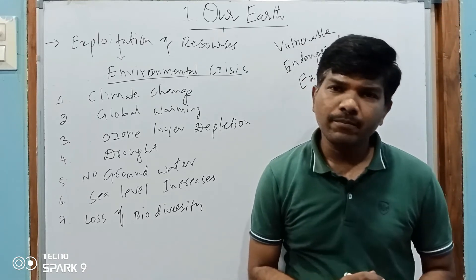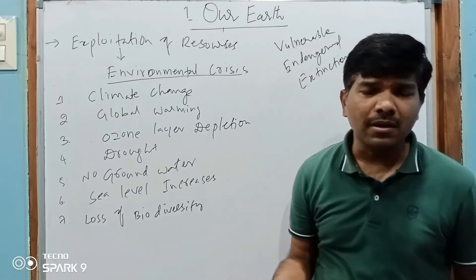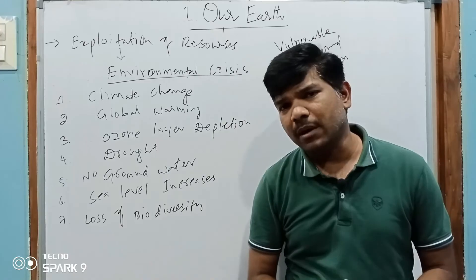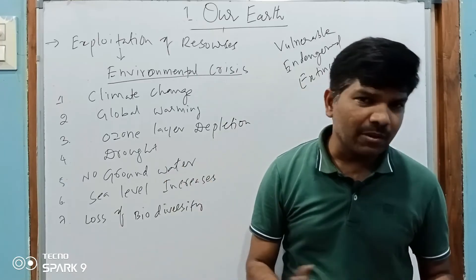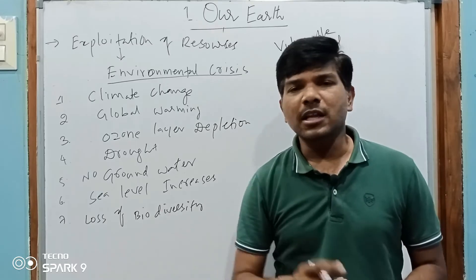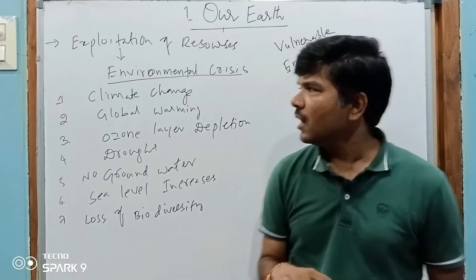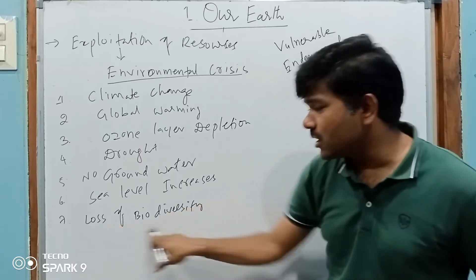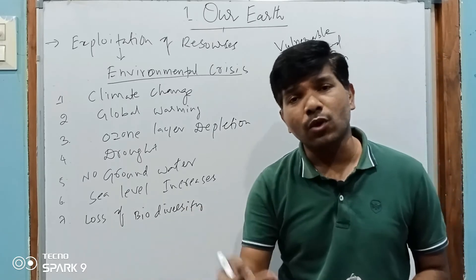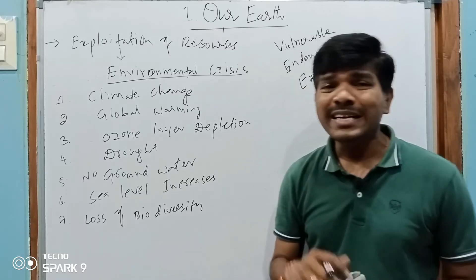For example, the Gangetic Dolphin, Asiatic Cheetah, and Crocodile are not available anymore. In the future, tigers and elephants may also not be available — we will have to see them only on YouTube, in pictures, posters, or photographs. If we lose very important flora and fauna, it will be very difficult for us to survive.